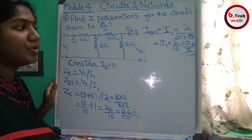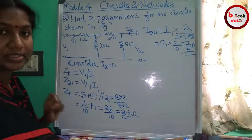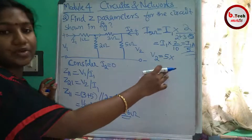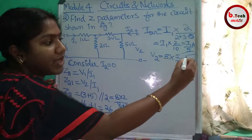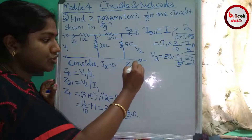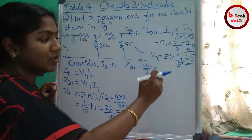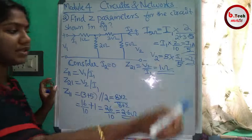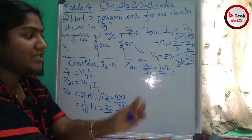The current through 5 ohm is I1 by 5. Now V2 equals (I1/5) times 5, which gives V2 equals I1. Therefore Z21 equals V2 by I1, which is I1 by I1, equals 1 ohm. So Z21 is 1 ohm.